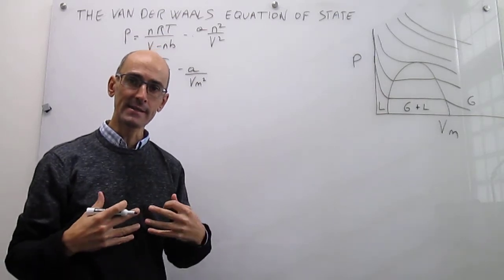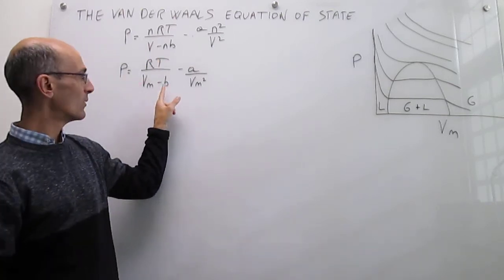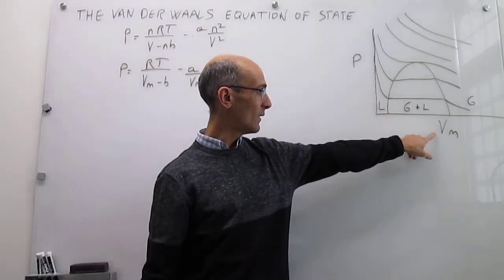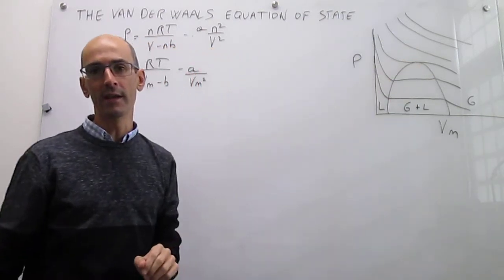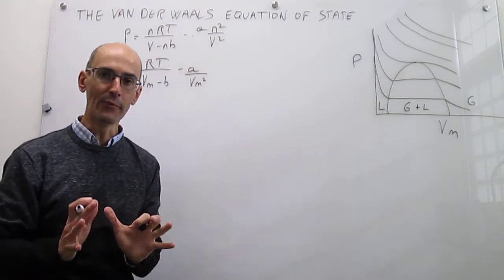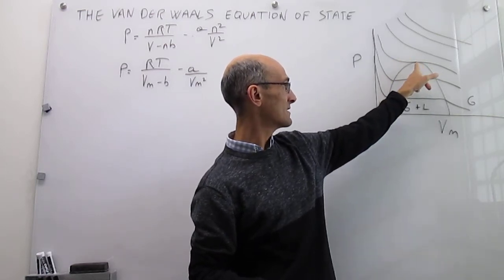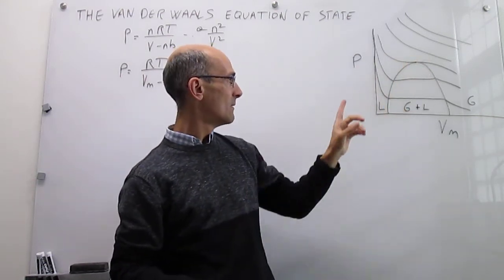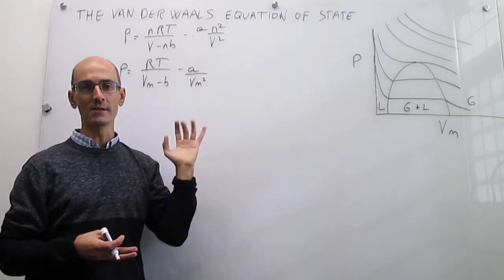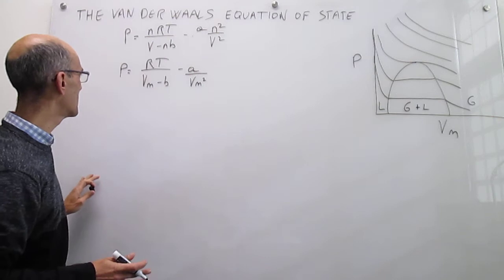What we want to do is find the relationship between the b parameter (accounting for repulsions) and the a parameter (accounting for attractions) with the critical pressure, critical molar volume, and critical temperature. At the critical point, something very important about the isotherm is that the first derivative is zero — the slope of the tangent line is zero — and there's also an inflection point, so the second derivative is zero. We'll take both derivatives to find those relationships.